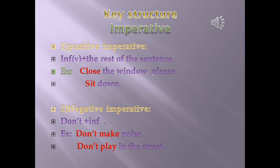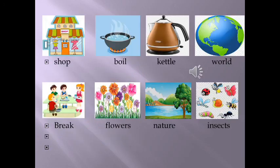For the negative imperative, we start with 'don't' plus the infinitive. For example: don't make noise; don't play in the street.